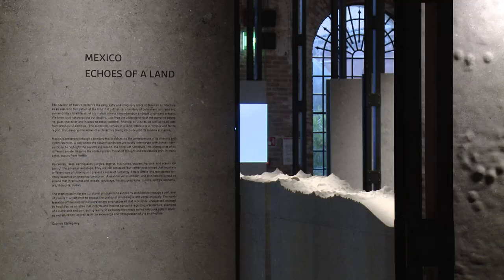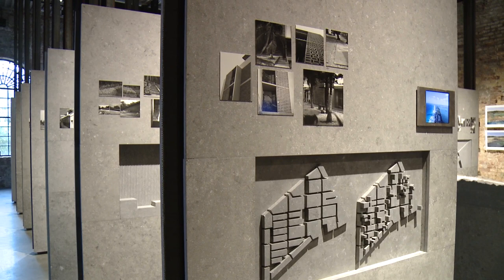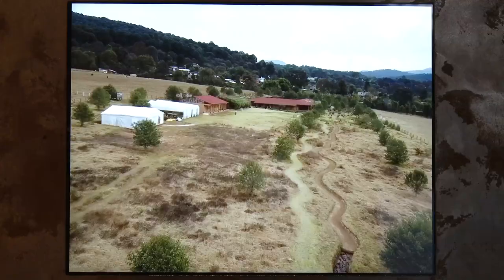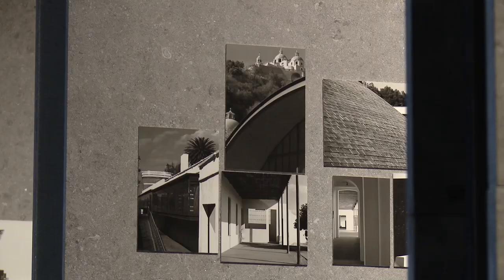The pavilion is named 'Echoes of a Land' and it responds to the curatorial proposal by Grafton Architects, 'Free Space.' How we understood the concept is that our territory in Mexico is very diverse, very rich, and one of the most interesting things to look at as architects is its geography.